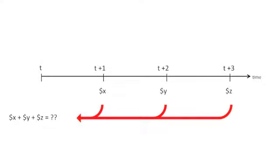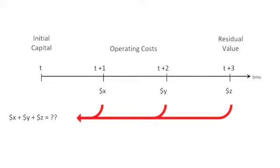NPV is a financial projection or cash flow that brings a future series of sums or payments back to a present value based on a discount or interest rate. NPV usually builds upon the foundation of a life cycle cost model that includes an initial capital outlay, operating costs over the term of the analysis, and a terminal value or residual value at the end. Net present value improves life cycle cost conclusions by introducing the time value of money, or the cost of capital, into the equation.